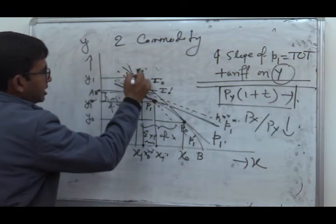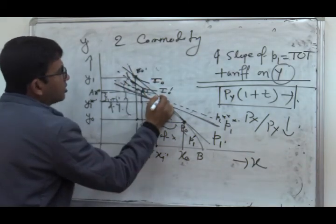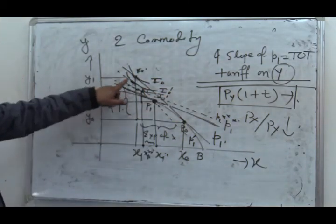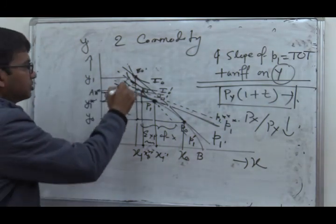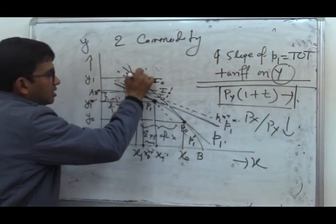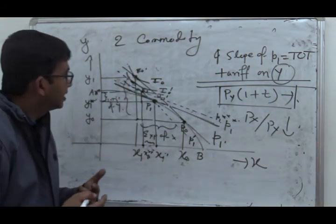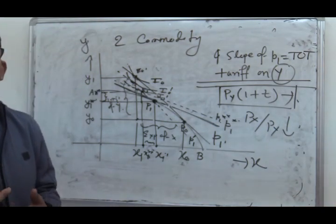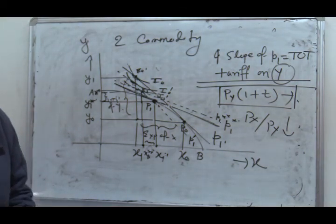Finally, the welfare effect: initially the economy was on the higher indifference curve I0, at point E0. After tariff, the economy falls to the lower indifference curve I1, at point E1. This movement from E0 to E1 indicates a decline in the welfare level of the country, which we call the deadweight loss of tariff, or the cost of social distortion.